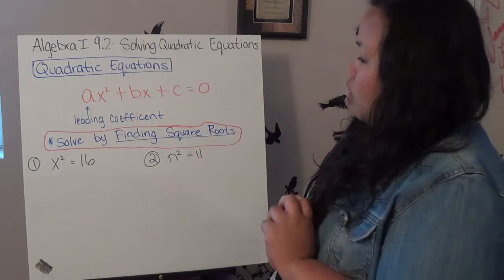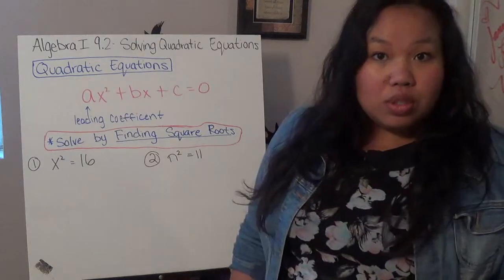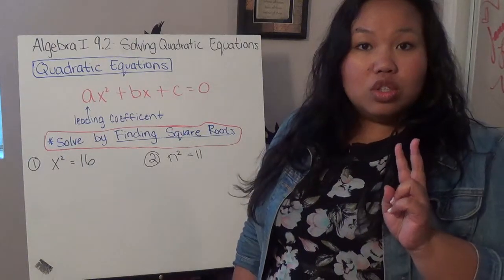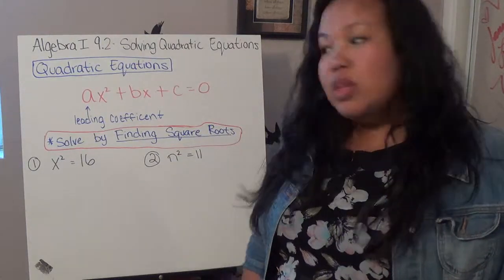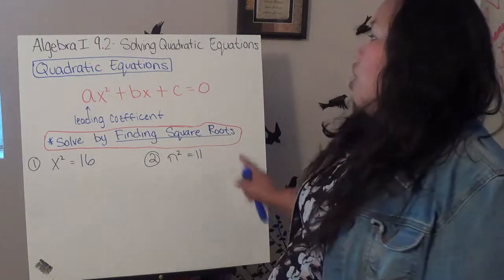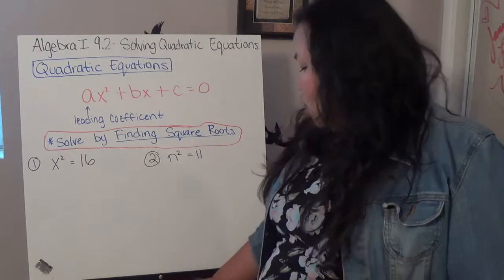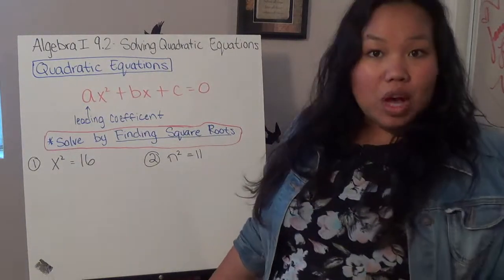So, the last section you dealt with square roots. Remember, like 3 times 3 is 9, so the square root of 9 is 3. In order to solve these quadratic equations, you're going to apply the same concept.